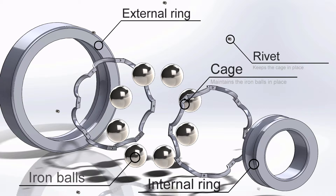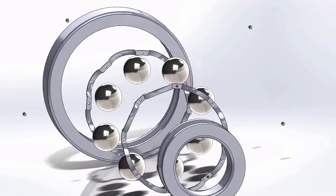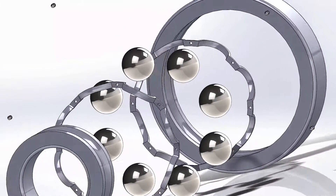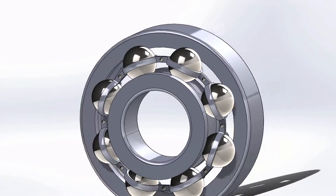A bearing consists of five main components: an inner and outer ring, balls or rollers and a cage to hold them in place, and rivets to hold the assembly together. Thanks to smooth, efficient bearings, our wheels can continue to turn for much longer times than normal.